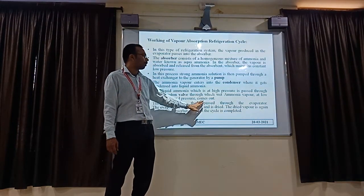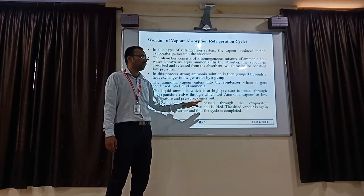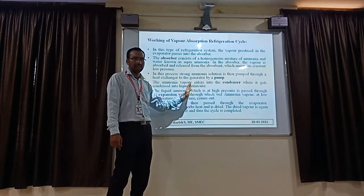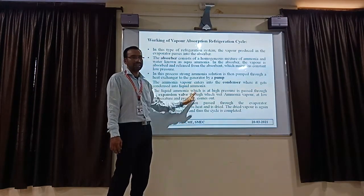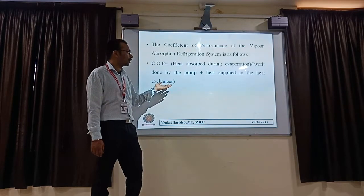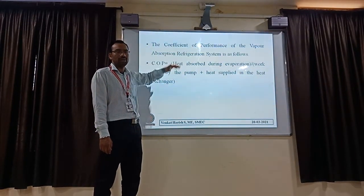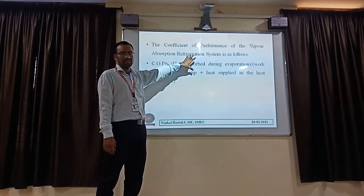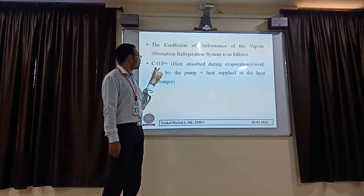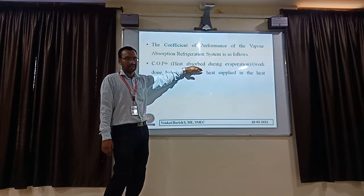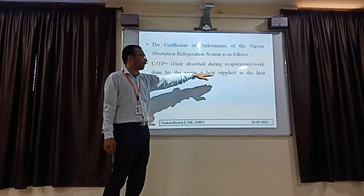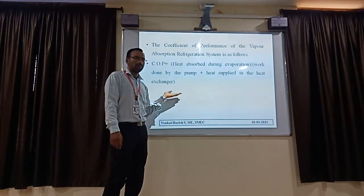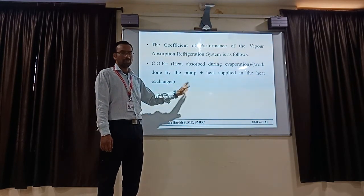Finally, the vapor is passed to the evaporator. The evaporator absorbs the heat, and the vapor is again recirculated to the generator, condenser, and absorber — and the heat circulation continuously moves on. This is the actual working process of the vapor absorption system. Next is its performance — the coefficient of performance of vapor absorption refrigeration. COP is equal to heat absorbed during evaporation divided by work done by the pump plus heat supplied in the heat exchanger. If we know these values, we can easily obtain the performance of the vapor absorption system.